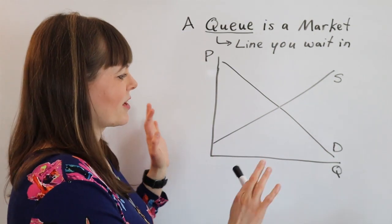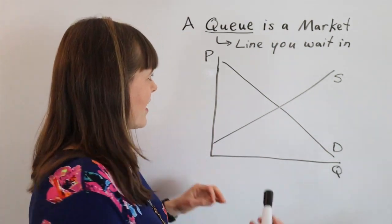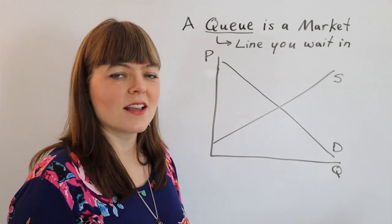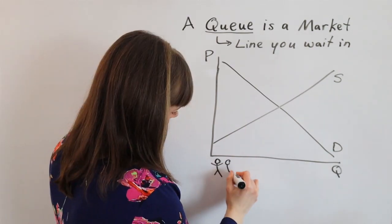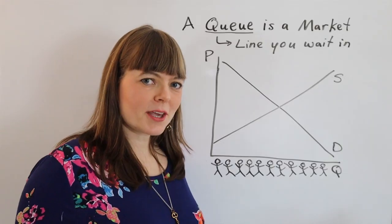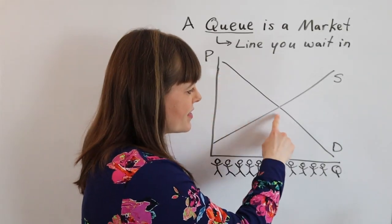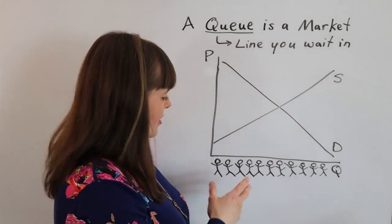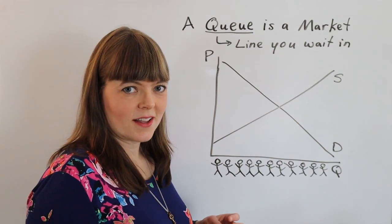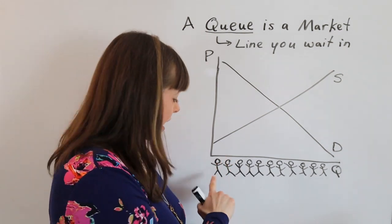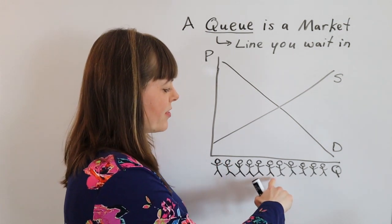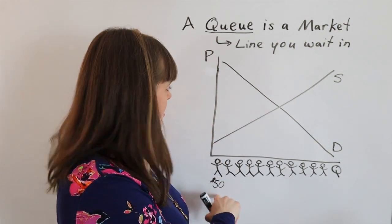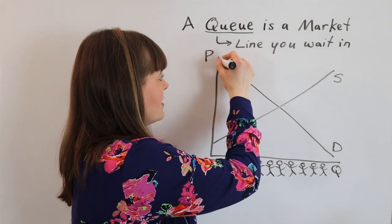Let's map this onto the regular supply and demand curve. Starting with the regular demand curve the way I normally teach it in my principles of economics courses: if you're talking about the market for t-shirts and you want to derive the demand curve, you go out and ask everybody how much they would pay for a t-shirt. Then you line those people up in order of how much they would pay. The person who would pay the most — say $50 — that maps onto their place on the demand curve.